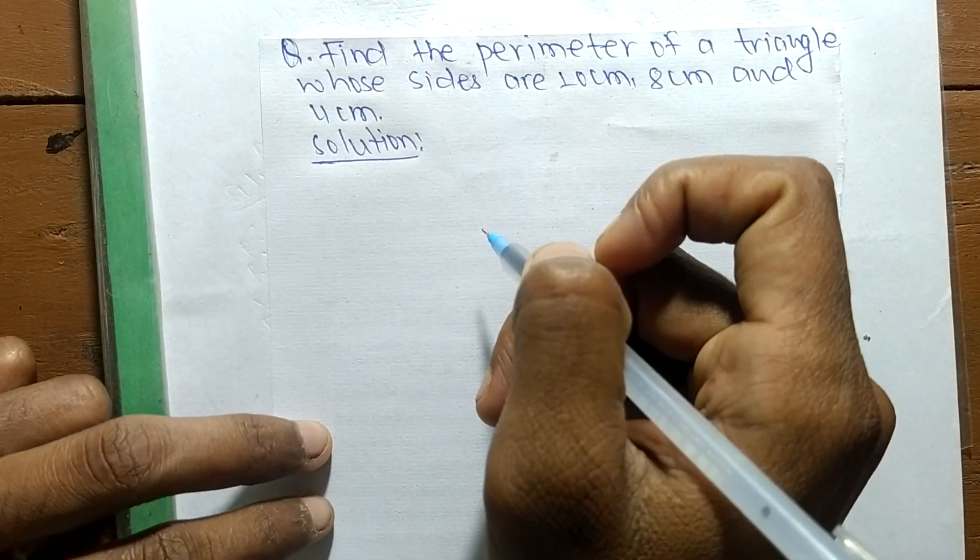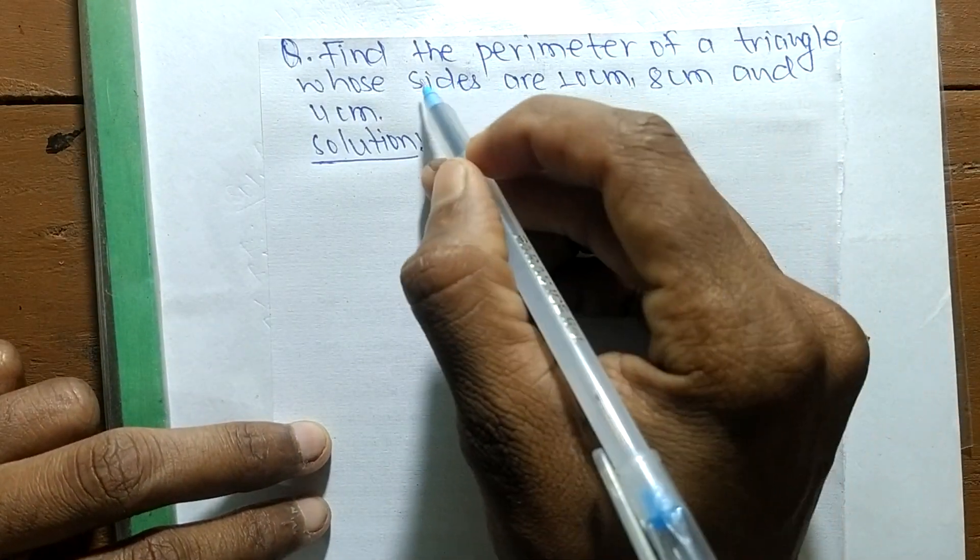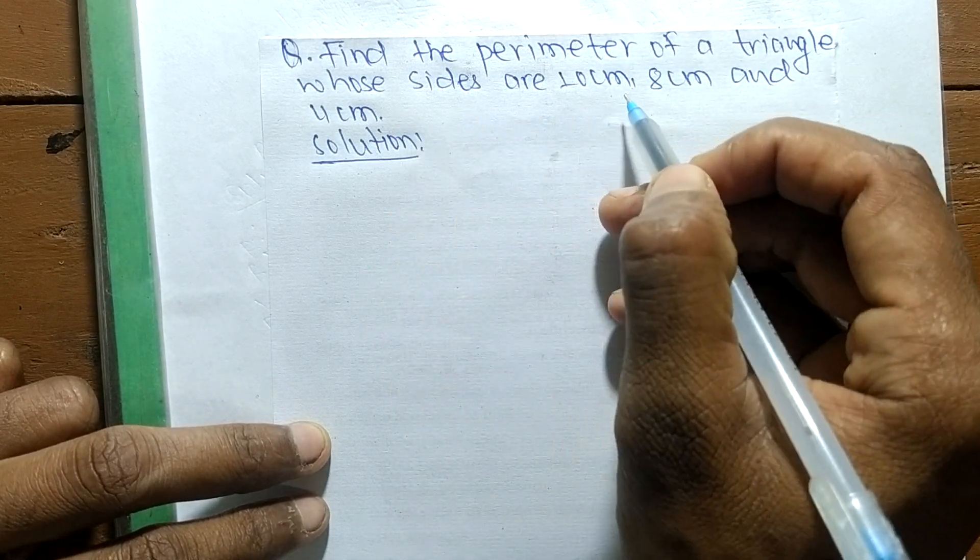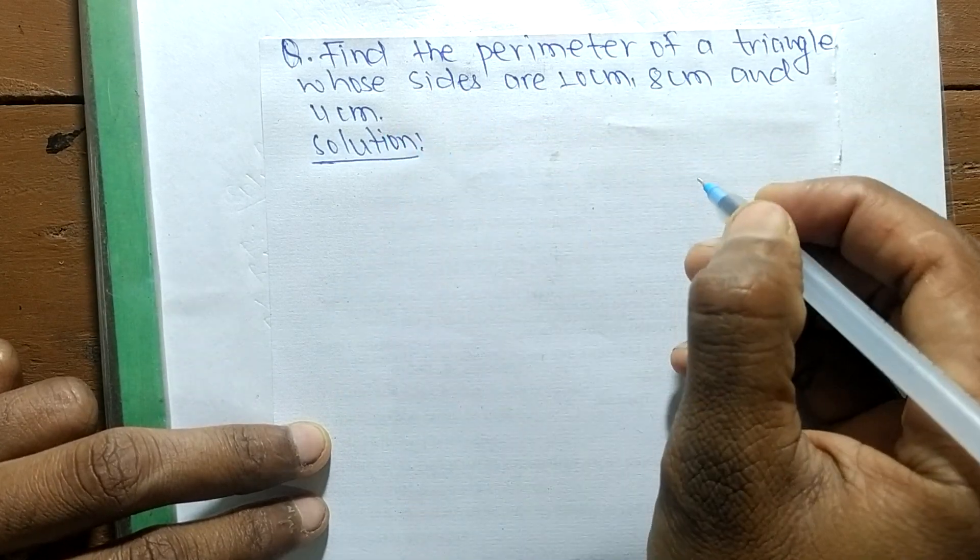So today in this video we shall learn to find the perimeter of a triangle whose sides are 10 cm, 8 cm, and 4 cm.